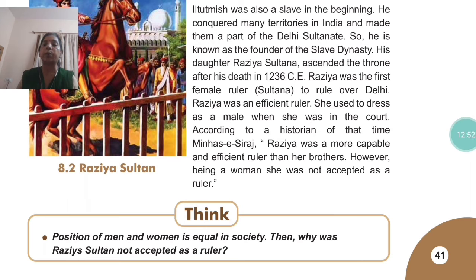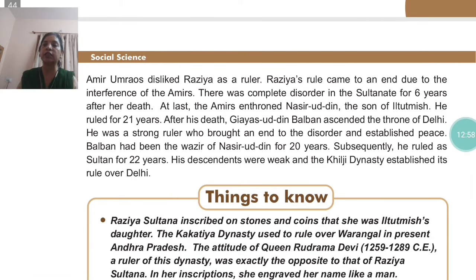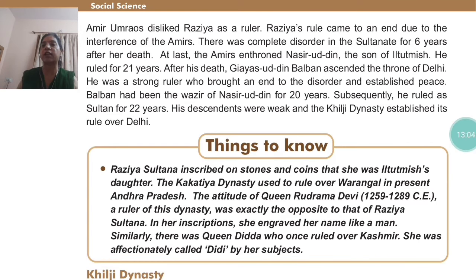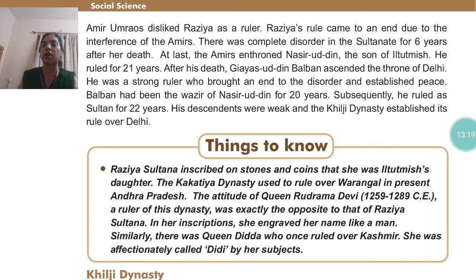However, being a woman, she was not accepted as a ruler. In this male-dominated society, women were less accepted as rulers. The Amir Umraos — the scholars — disliked Razia as a ruler. Razia's rule came to an end due to the interference of the Amirs.